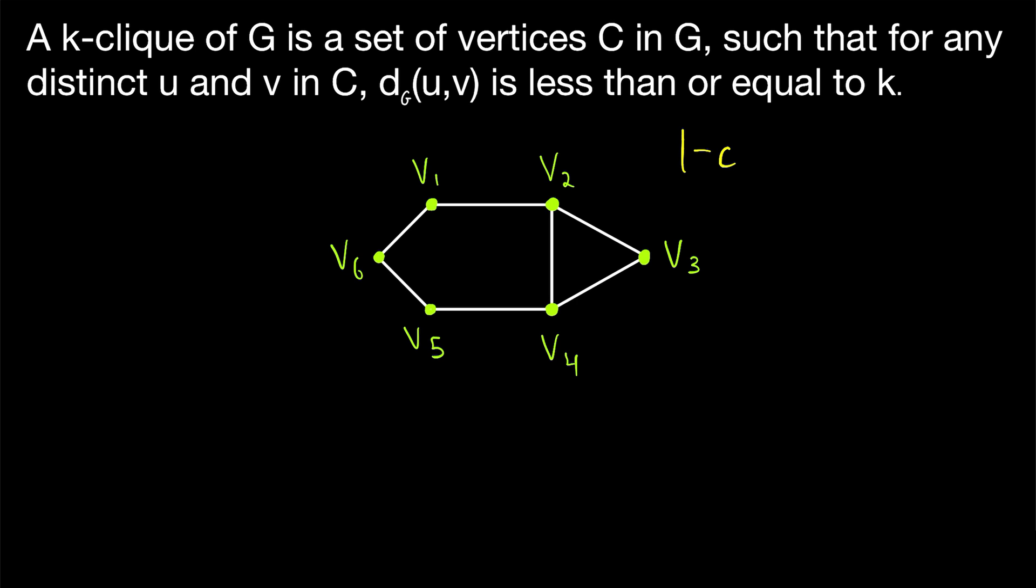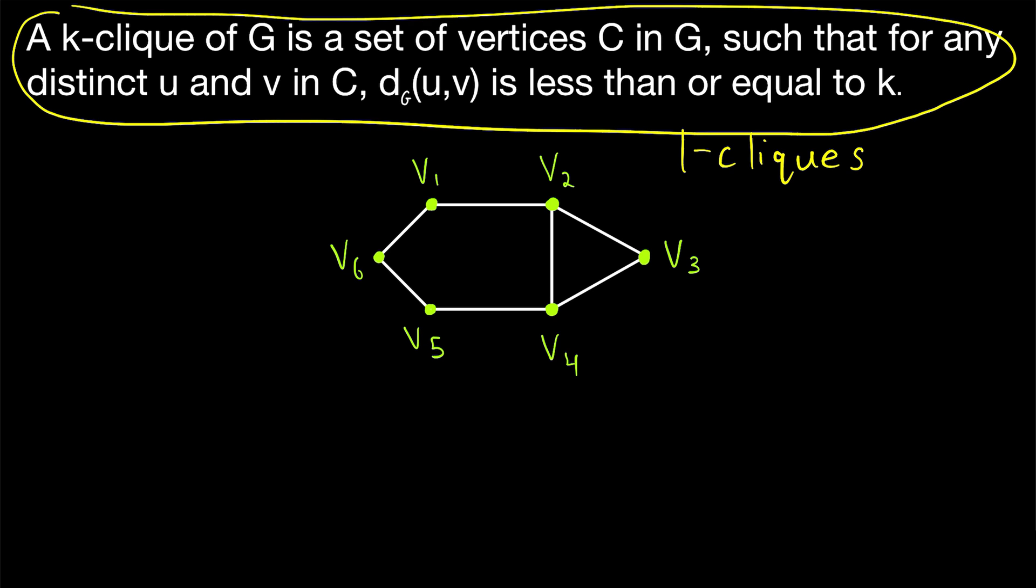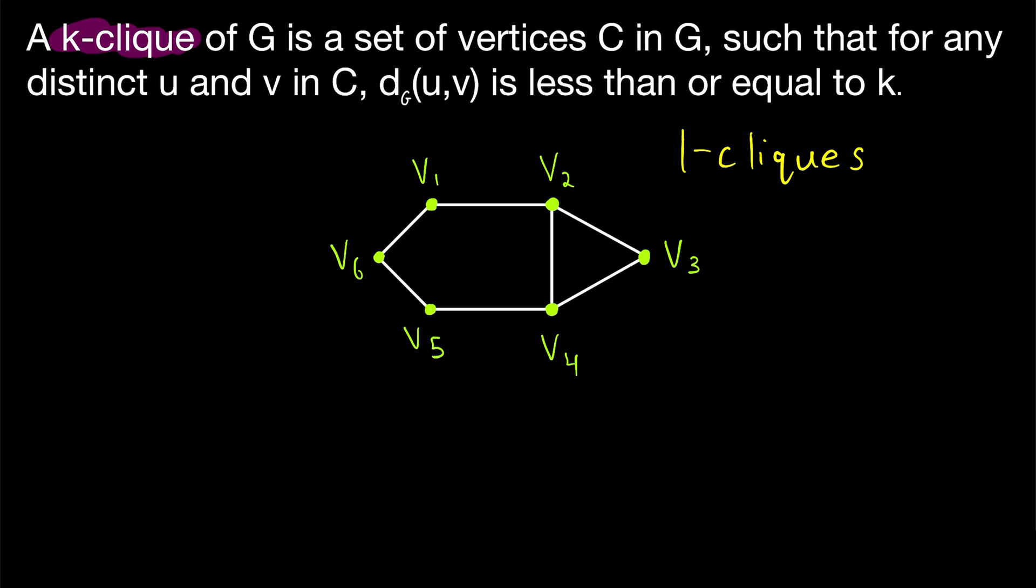By this definition, the clicks we're used to are one-clicks. Because in your standard click, the distance between any distinct vertices is less than or equal to one. And of course, a one-click by definition is also a k-click for any value of k greater than one. And note that although I didn't include it here, just like with normal clicks, we might also use the term k-click to refer to a subgraph of G whose vertex set has this property.